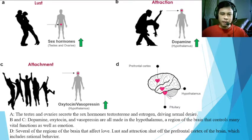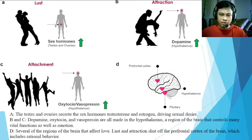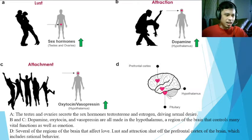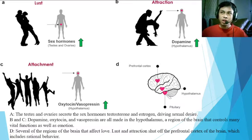When the prefrontal cortex is shut off during lust and attraction, we stop thinking rationally — we follow our emotions over our thinking. This is why people sometimes do things they later regret when in love. Balance between thinking and emotion is essential for healthy decision-making. As the saying goes, 'I love you from the bottom of my hypothalamus' — because the hypothalamus, not the heart, is what's actually functioning.